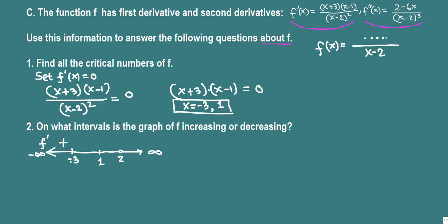Take a number between negative 3 and 1, like 0, and plug in — you get a negative value. For the interval between 1 and 2, pick 1.5 and plug in — you get a positive value. Finally, pick 3 for the interval from 2 to infinity: 3 plus 3 is 6, and 3 minus 1 is 2, giving 6 times 2 positive on top, and the bottom is always positive — so the derivative is positive.